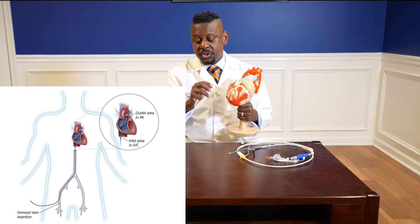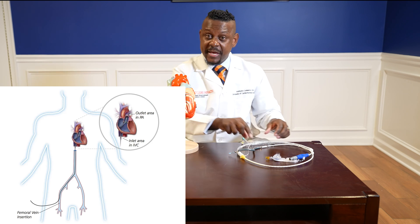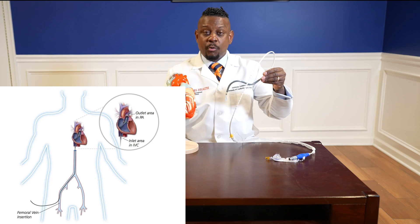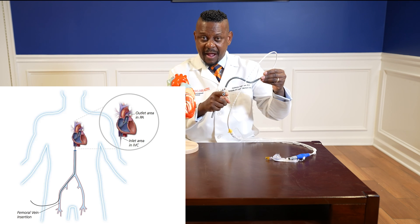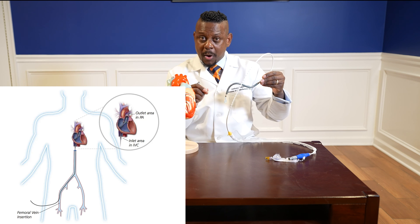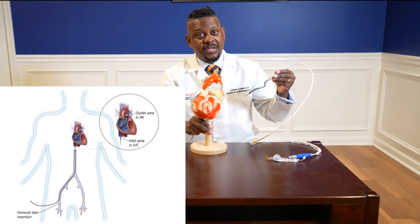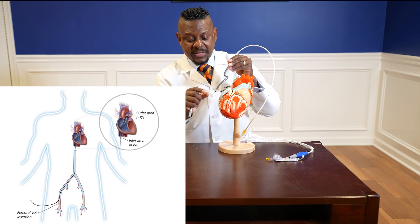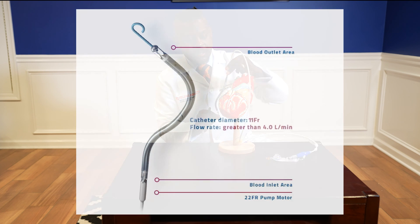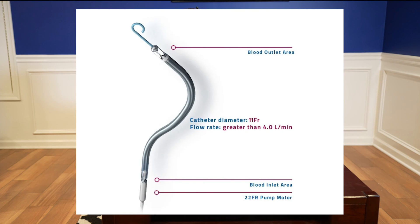Once the wire is in the correct position, we take the Impella RP and advance it over the wire into the correct position — with the input area in the IVC and the output area in the pulmonary artery. This pulls blood out of the IVC and pushes it into the pulmonary artery, effectively bypassing the right ventricle.